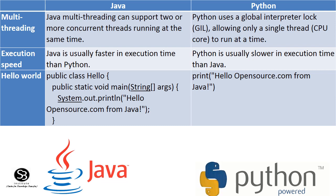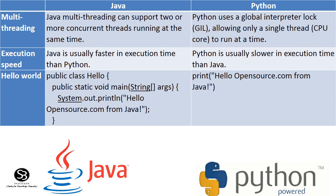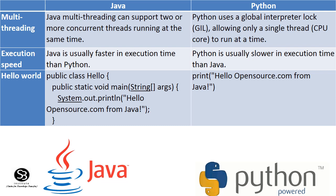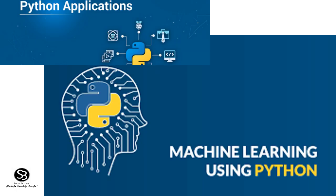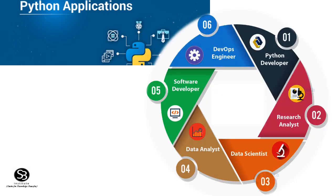Here is a simple example. In Java: public class hello { public static void main(String[] args) { System.out.println("Hello opensource.com from Java"); } }. In Python, this is done in a single line: print("Hello opensource.com from Java"). Python is used most in machine learning, and it can handle huge amounts of data and manage the cost of APIs.